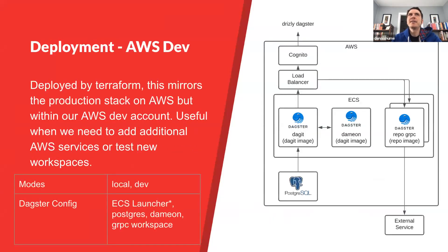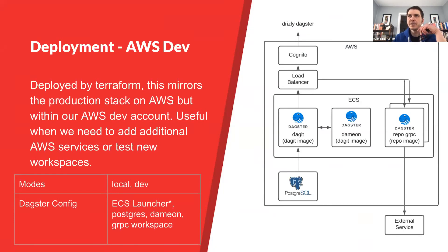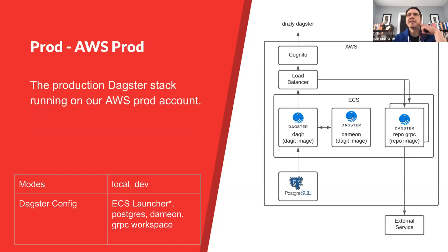Our dev deployment is getting close to what it looks like in production — Dagster running on AWS resources. We built our own stack around ECS rather than EKS for our Dagster deployment. It looks pretty similar to Docker Compose but using AWS resources, and then our production stack is the exact same stack but on a different AWS account.